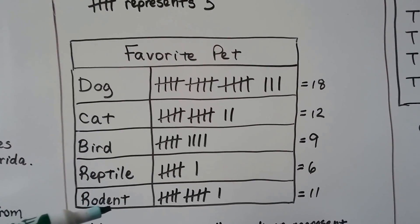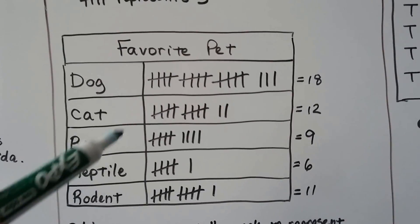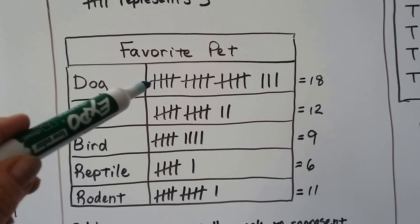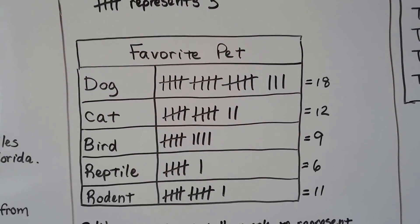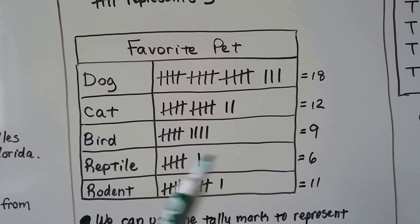So if we took a survey and asked everyone if they like dogs, cats, birds, reptiles, or rodents as their favorite pet. And every time we got an answer, we put a tally mark. When we got to four, we crossed it for the five. We can count these very quickly and say 5, 10, 15, 16, 17, 18. So that's 18 for dogs.